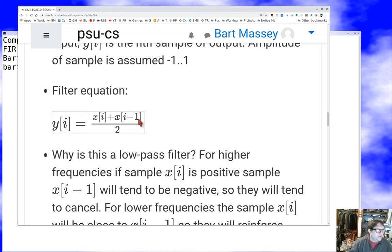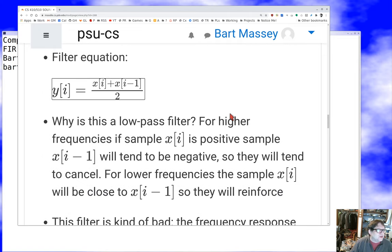The delay of this filter is sort of one sample, because the previous sample is used in computing the output of the current sample. So you really can't output the current sample until you've seen not only the current input but the input before that. This is going to lag by one.